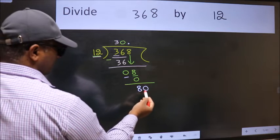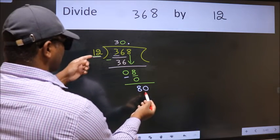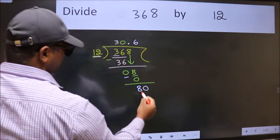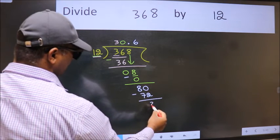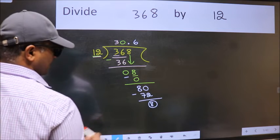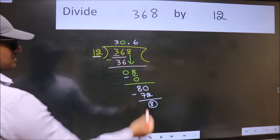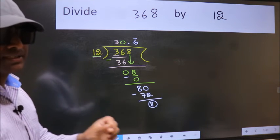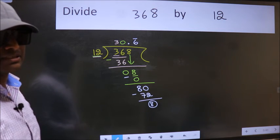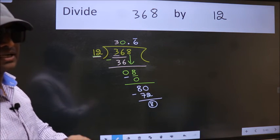So 80. A number close to 80 in 12 table is 12, 6, 72. Now we subtract. We got 8 again. That means we get bar on this number. Did you understand where the mistake happens? You should not do that mistake.